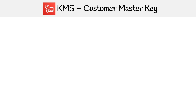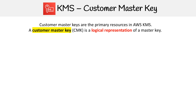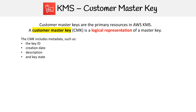A customer master key is the primary resource that AWS KMS is managing. A customer master key, abbreviated as CMK, is a logical representation of a master key — you're not directly accessing the master key itself. With that logical representation, we get to attach a lot of metadata that helps us understand things about our master key: the key ID, the creation date, a description, and the state the key is in. The CMK also contains key material used to encrypt and decrypt data.